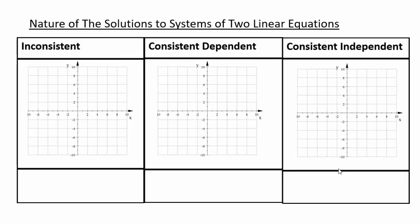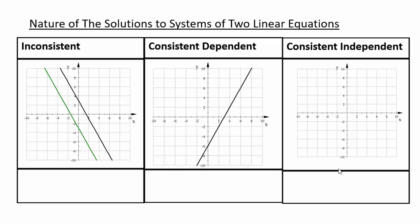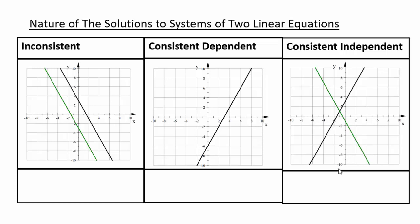Let's restrict our attention right now to two linear equations. We have different cases. For the first one, if you have two lines and they are parallel to each other, then they're never going to meet. So no point in the plane will satisfy both equations or belong to both lines — you're going to have an inconsistent system. What if both lines lie on top of each other? Then all the points on that line will be the solution. The third case is that the two lines intersect each other, in which case only the point where they intersect satisfies both equations.